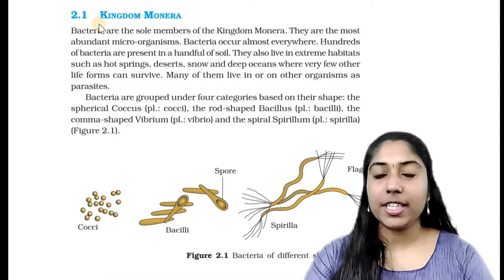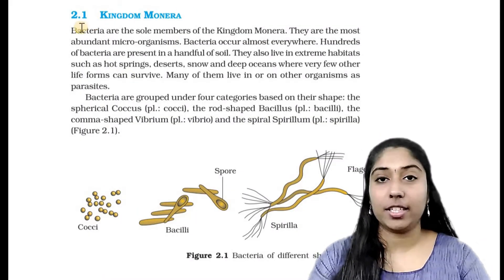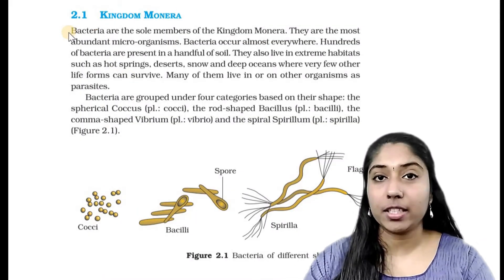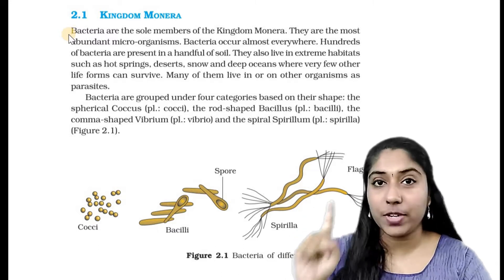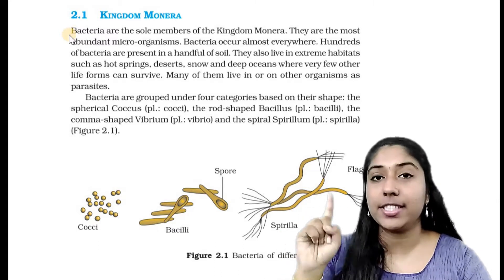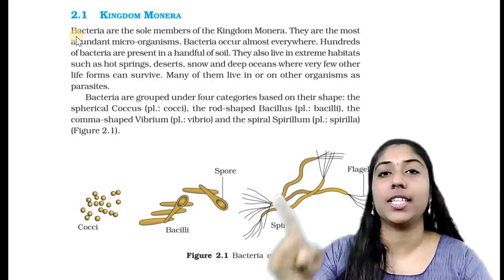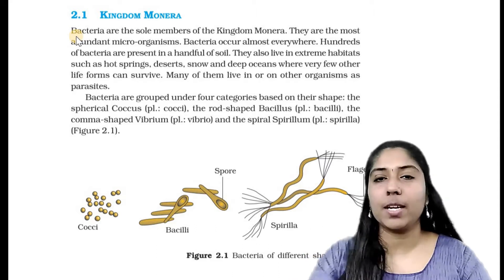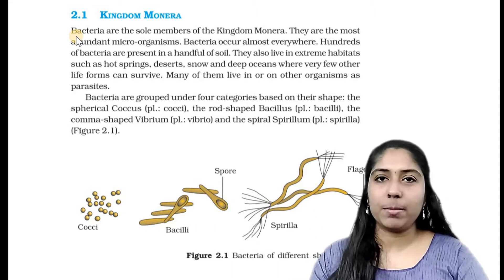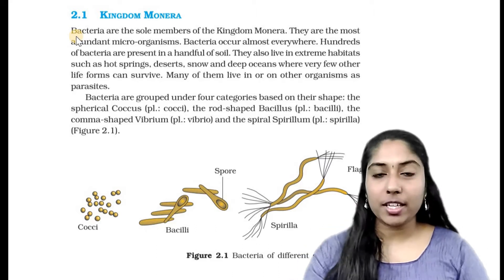This is Kingdom Monera. This is the 5 Kingdom classification — R.H. Whittaker 1969 classification. Kingdom Monera is the first kingdom.